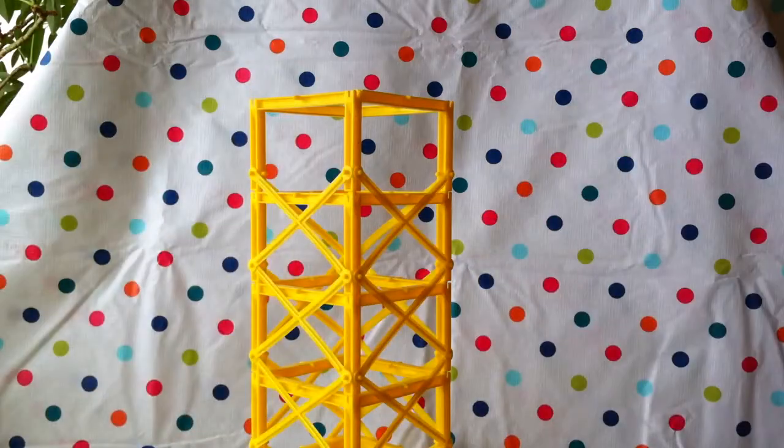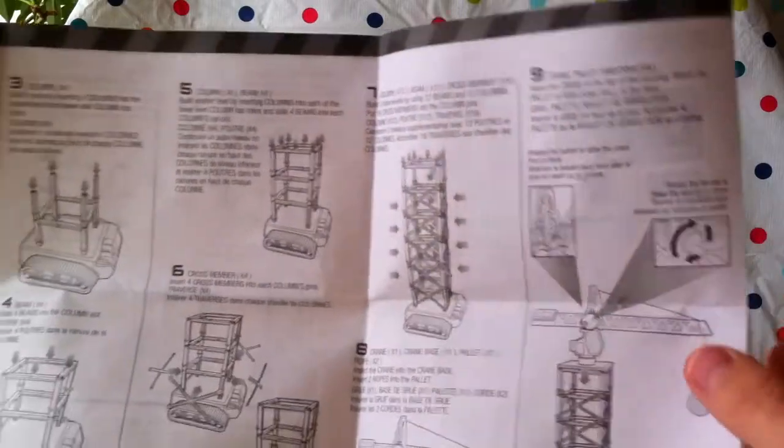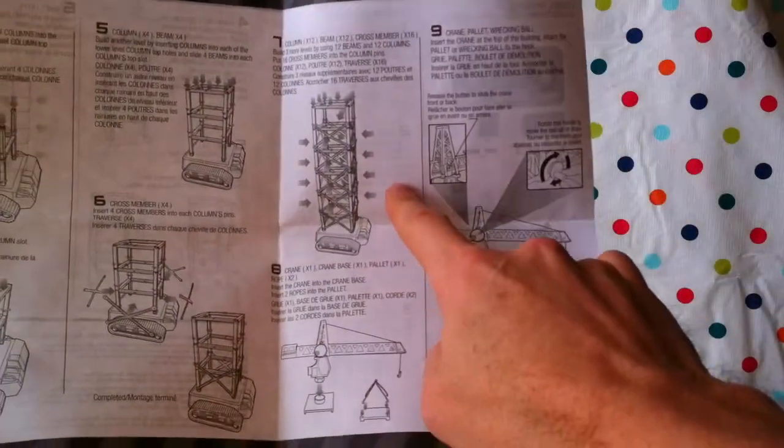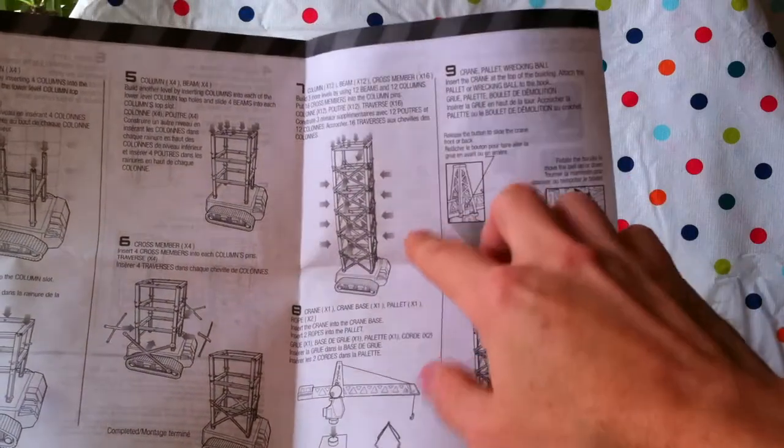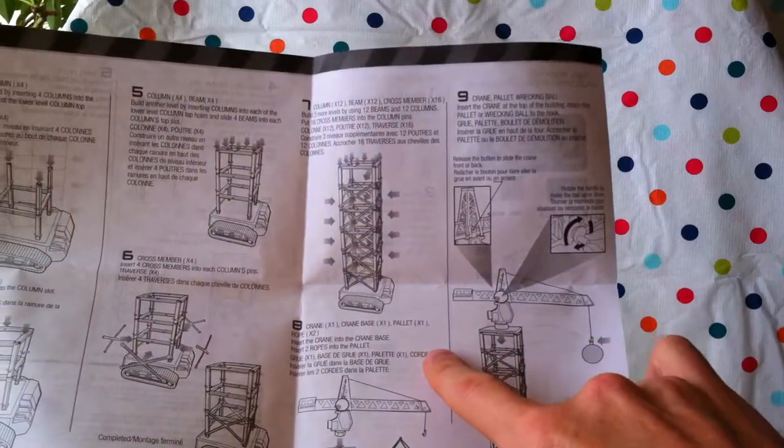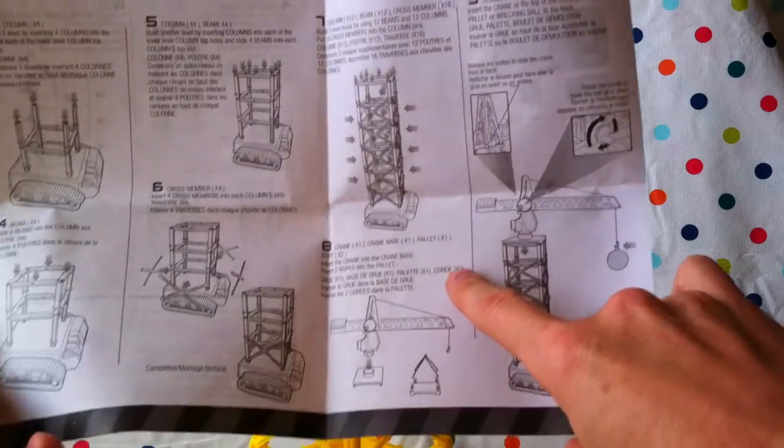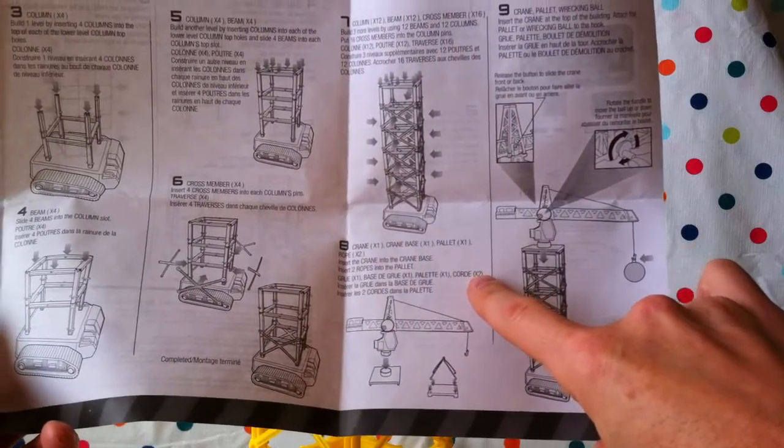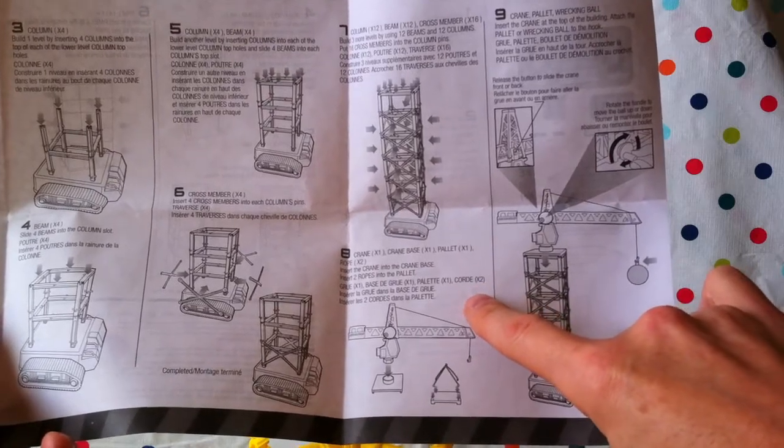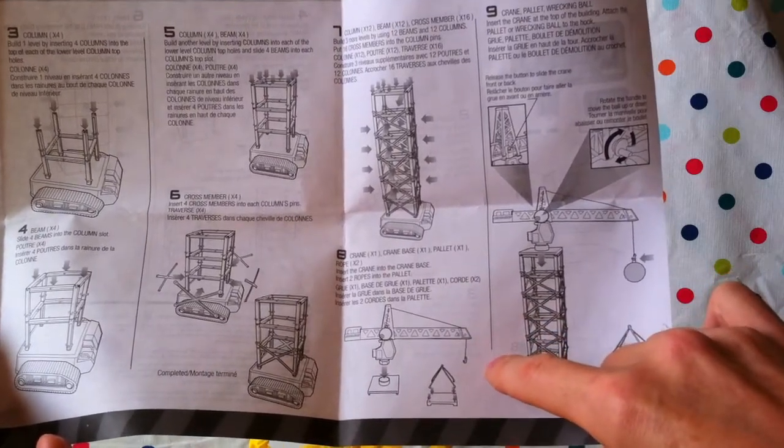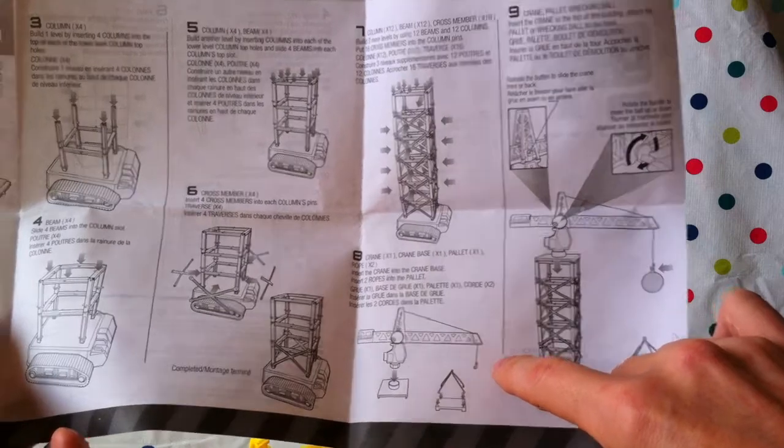Let's see where we are. Yesterday we finished number seven. We've completed building it and put on the cross members. Now we're going to complete the crane part, number eight. We take the crane, the crane base, a pallet, and rope. We insert the crane into the crane base and insert two ropes into the pallet.